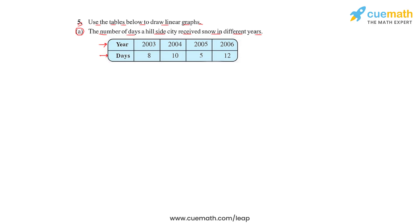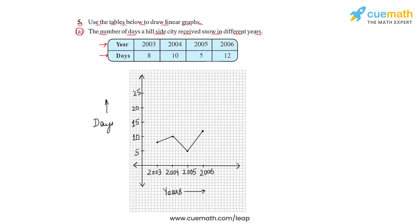If we draw the line graph of this data, this is the line graph which we'll get, where we have taken the different years on the x-axis and the number of days for which Hillside City received snow as the y-axis.